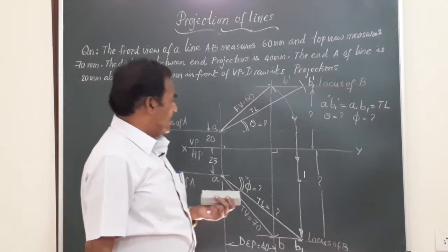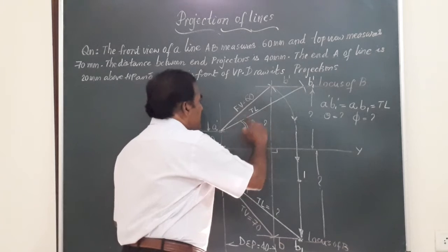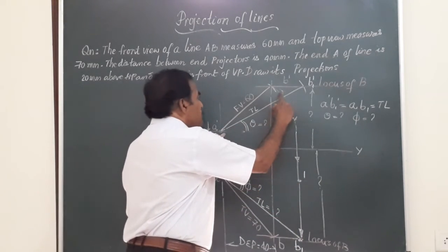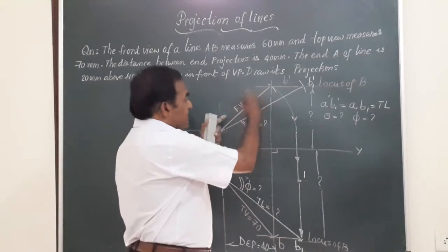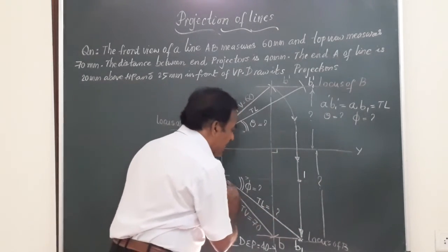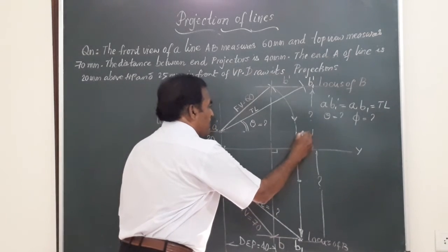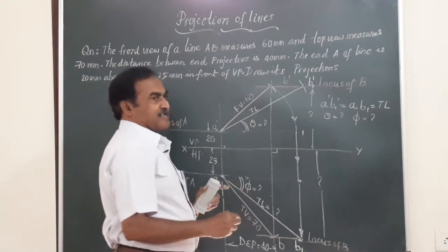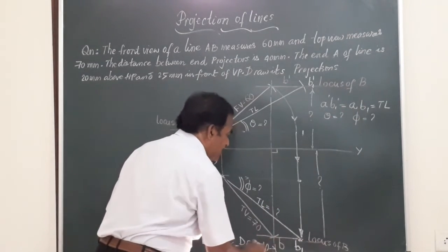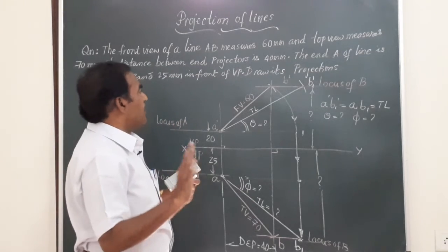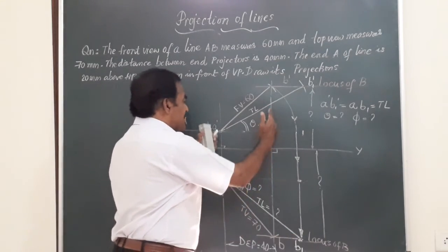Friends, I hope everyone is able to follow this problem clearly. Before I end this session, I would like to tell you an important concept. Whatever the arrows I have drawn here — I have shown arrows in the downward direction — these arrows can be reversed. That means whatever arcs I have used are reversible. Suppose you have information of the true length: you can reverse the arc and get a point. Also remember B' and B1' lie on a horizontal line, and B and B1 lie on their respective loci. So totally you have four lines: the front view, the true length in the front view, the top view, and the true length in the top view, plus the distance between end projectors.